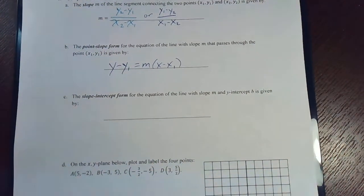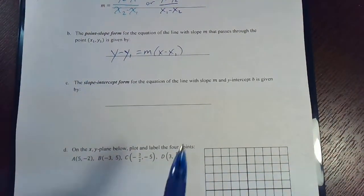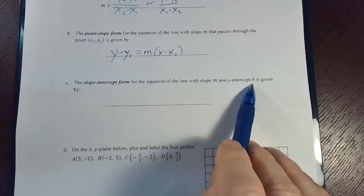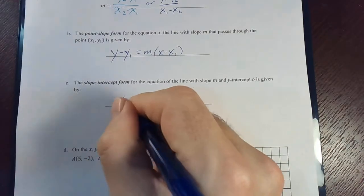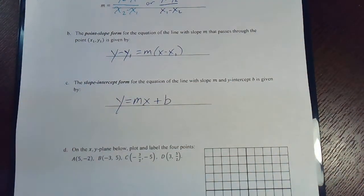The slope-intercept form, that's the one we probably all remember, is very simple. You get the slope m, and this time the point they're giving you is the y-intercept, which we're calling b. So that's simply y equals mx plus b. Slope-intercept form.